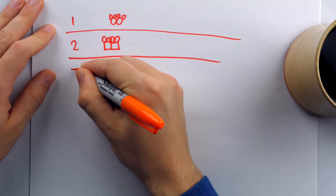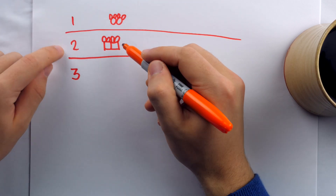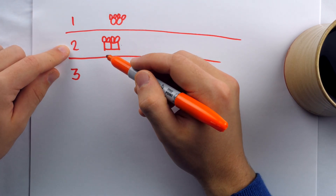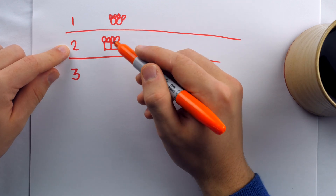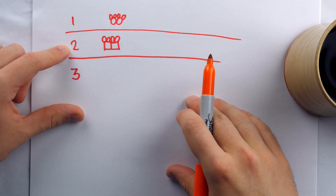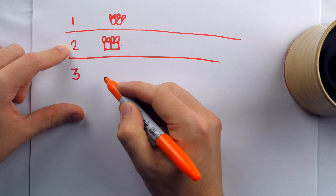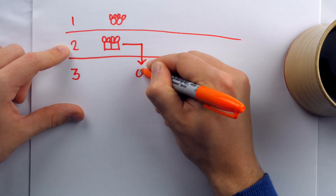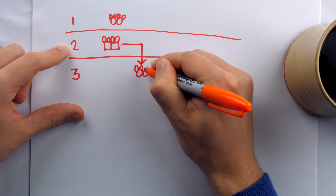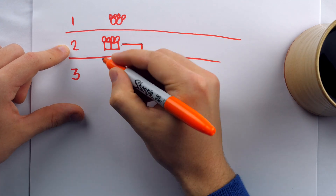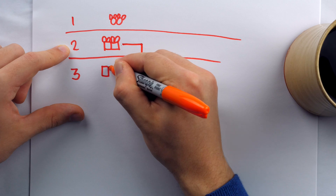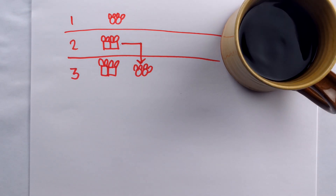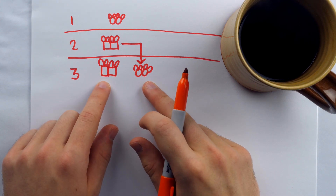Then in month three: by the end of month two, now that the rabbits have matured, they've also mated. By the end of month two they're going to give birth to a new pair of baby rabbits, so that in month three we now have this new pair of baby rabbits — represented with two circles — and of course we still have the original, now mature rabbits. Here in month three we have two pairs of rabbits.